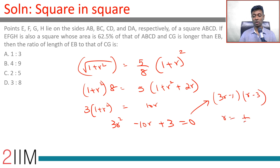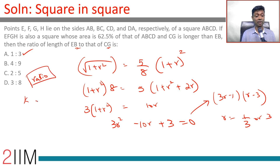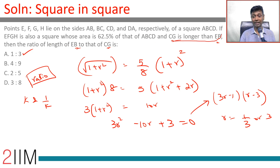Factoring: 3R² − 10R + 3 = (3R − 1)(R − 3) = 0, so R is either 1/3 or 3. We know EB is less than CG, so the ratio EB:CG cannot be 3:1 — it must be 1:3. Note that in equations of this type, the answers often come in the form K and 1/K, and the condition that CG is longer than EB resolves the ambiguity.